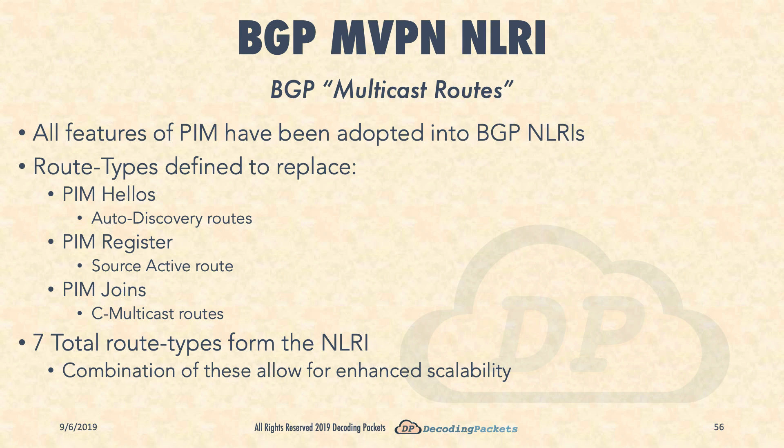Lastly, and perhaps most importantly, PIM join messages must be replaced. There are two BGP C-multicast routes that perform exactly that function. Why two? Well, if you think about it, there are really two types of PIM joins that need to be replaced: (*, G) or RPT joins, and (S, G) or SPT joins. So there is a BGP C-multicast route for each one.